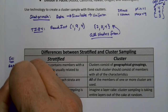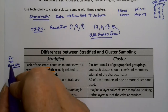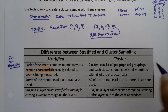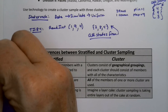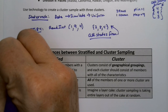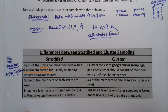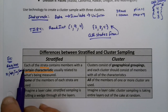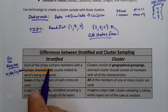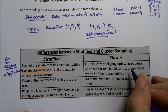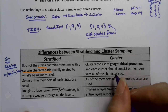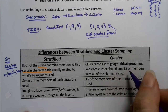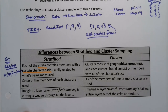With stratified, these are regions that have different effects for the census — they're breaking off a particular strata for a reason. Whereas a cluster tends to be geographical groupings where each cluster consists of members with all the characteristics. You're going to get all sorts of states and all sorts of different regions — that's a cluster sample.